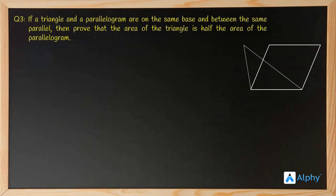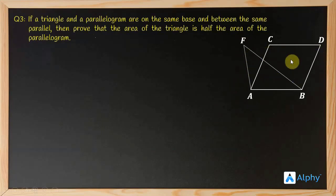Whenever we draw a diagram, we must not forget to mark the points. Let the parallelogram be ABCD and the triangle be ABF. So now we have to answer the question — we have to prove that this triangle has half the area of this parallelogram.